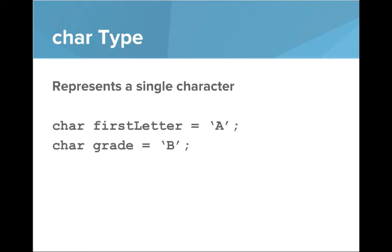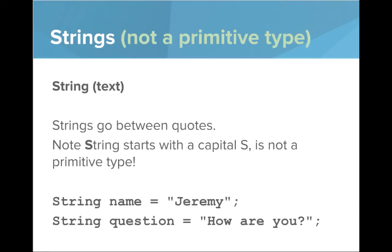Another type you'll want to know is called strings. Strings are not a primitive type like the others, and strings are for text. Strings go between quotes and start with a capital S. Remember it's not a primitive type like the others. If I want to write a variable to save my name, I write string name equals and then double quotes Jeremy. String question equals how are you.